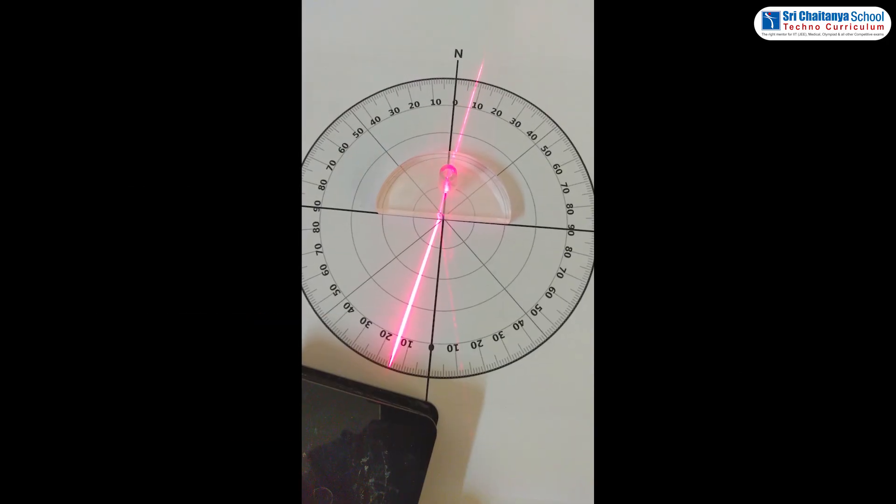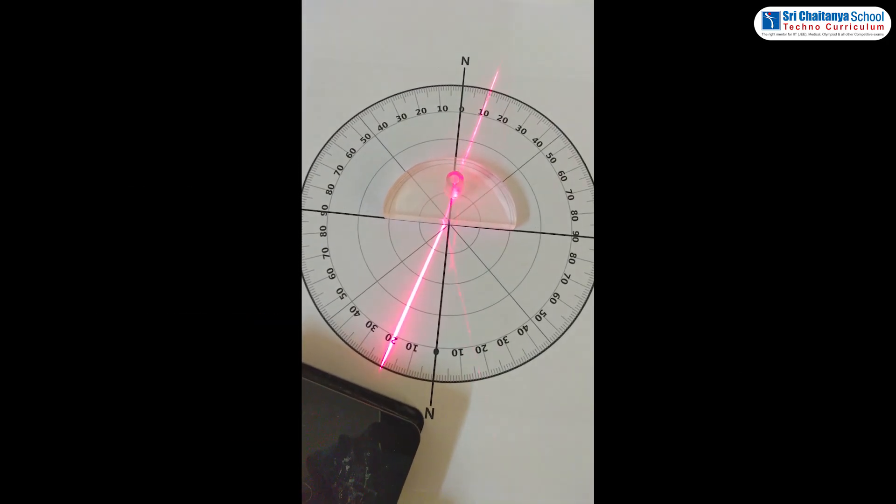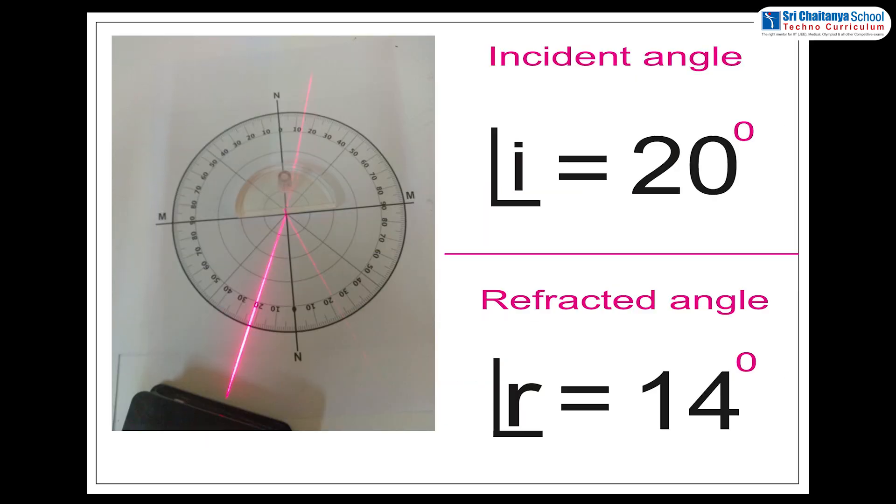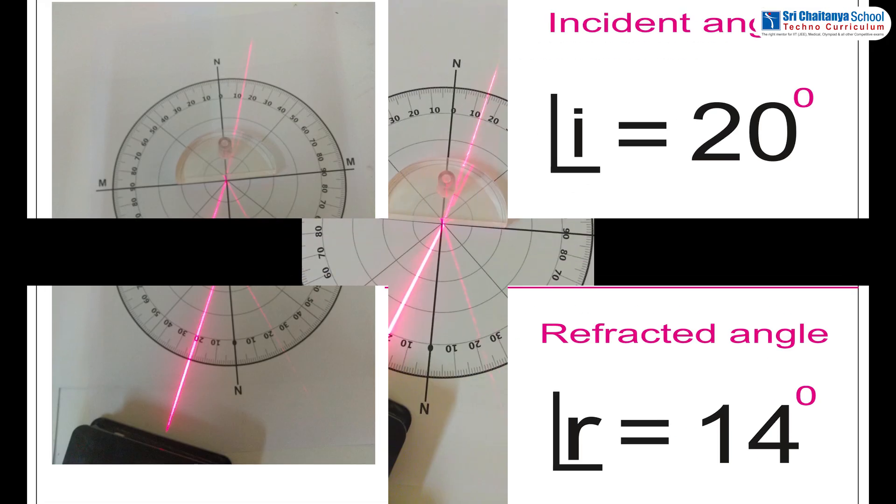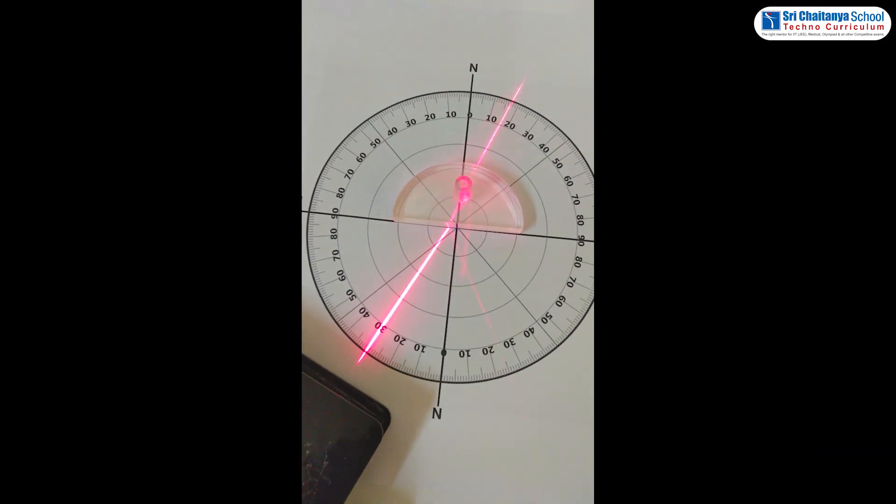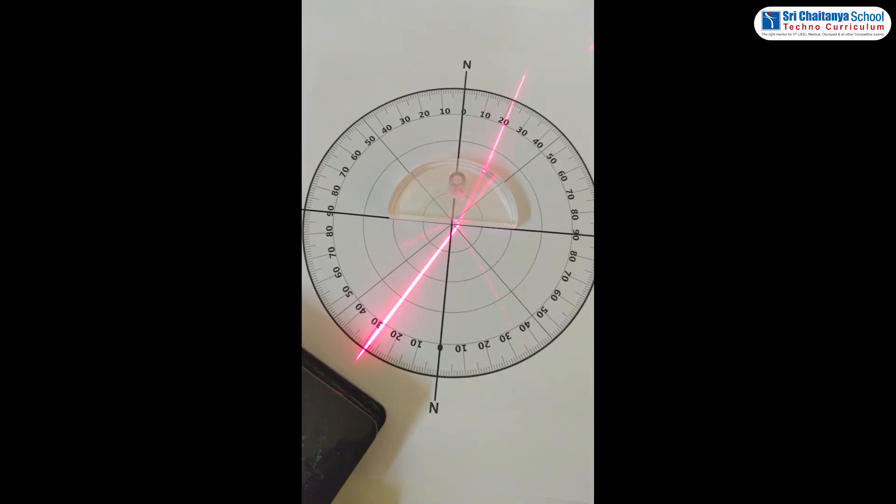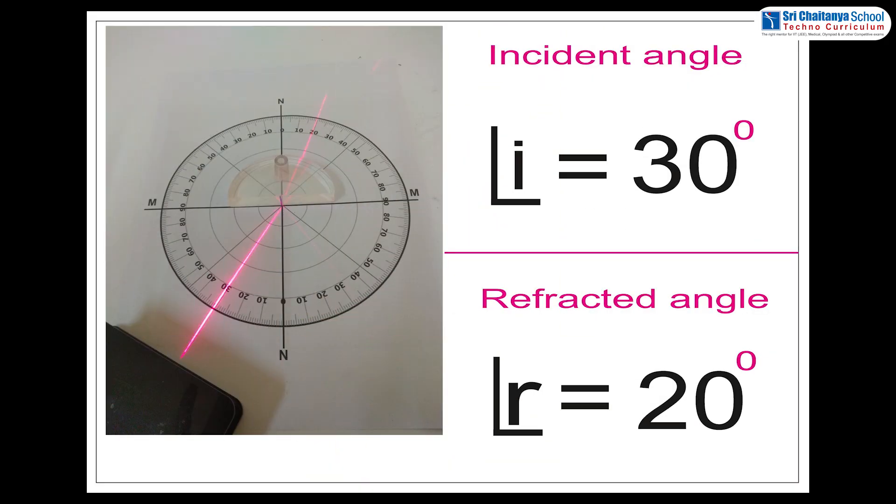Now, place the laser light at 20 degrees angle, find the corresponding angle of refraction. Here, you can find the angle of refraction is 14 degrees. Now, let us place the laser light at 30 degrees angle and find the corresponding angle of refraction. Here, the angle of refraction is 26 degrees.